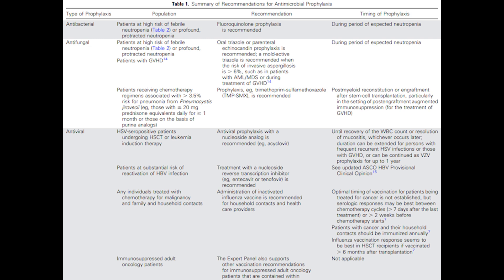For HSV, patients who are undergoing stem cell or leukemia induction therapy should receive acyclovir prophylaxis, but not any other patients. Patients who are neutropenic can get the influenza vaccine, but it should be inactivated. Those are the basic guidelines. In my impression, a lot of patients with hematologic disorders receive these prophylaxes, as do patients with prolonged neutropenia even in the setting of soft tissue malignancies, making them good candidates for prophylaxis.